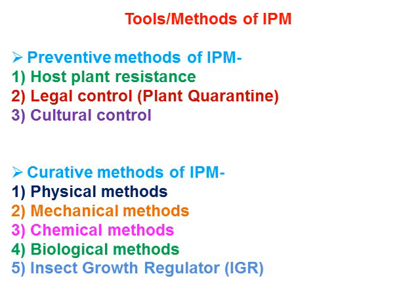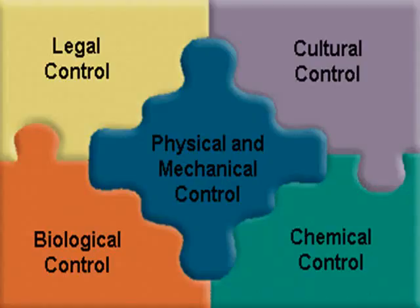Tools or methods of IPM, which we have seen in last hour's lectures — preventive methods include host plant resistance, legal control, and cultural control, while the curative methods include physical, mechanical, chemical, and biological use of IGR. Today we will go through these components of integrated pest management, which comprises all possible methods used in a compatible manner, closely associated with each other, with the ultimate aim to control pests.